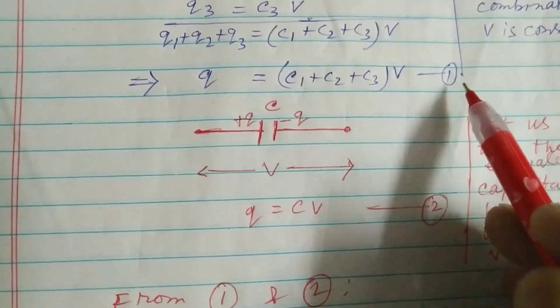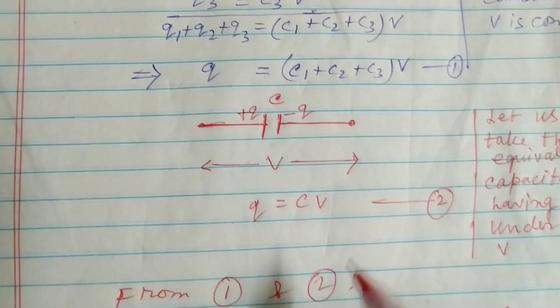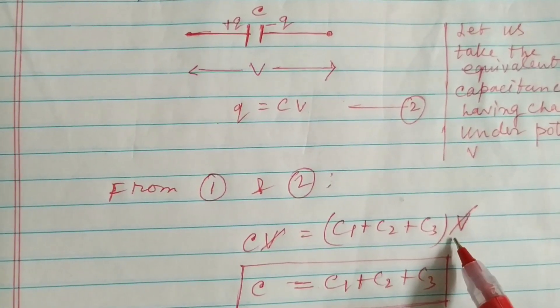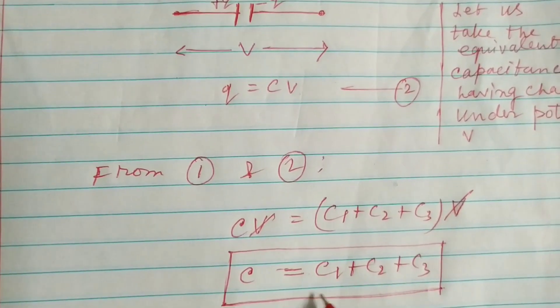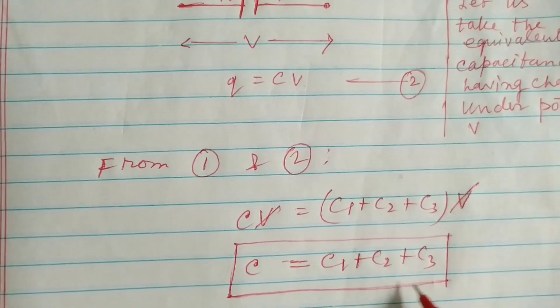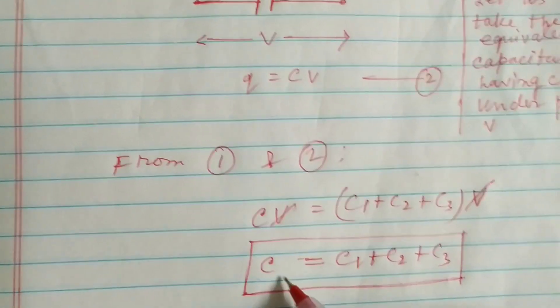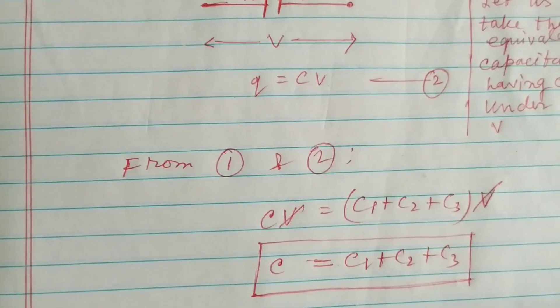So from 1 and 2, you can see left hand side Q, right hand side will be CV equals C1 plus C2 plus C3 into V. V V cancelled, C equals C1 plus C2 plus C3. So this is the result for the equivalent capacitance in parallel combination.